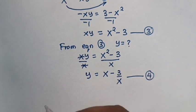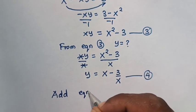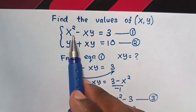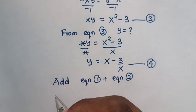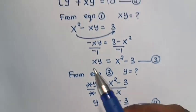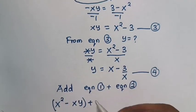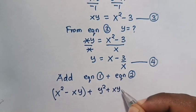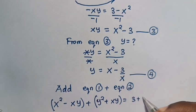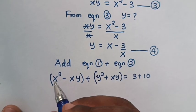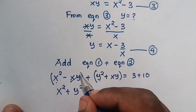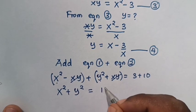Next, we are going to add equation 1 and equation 2. From equation 1, x squared minus xy equals 3, and equation 2, y squared plus xy equals 10. The left-hand side gives x squared minus xy plus y squared plus xy, and the right-hand side is 3 plus 10. The negative xy cancels with positive xy, so we get x squared plus y squared equals 13.